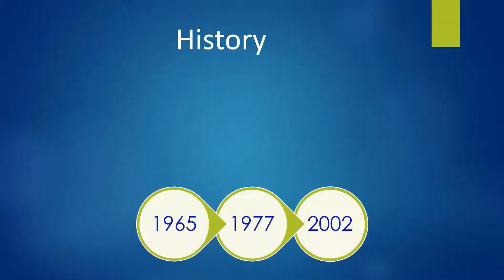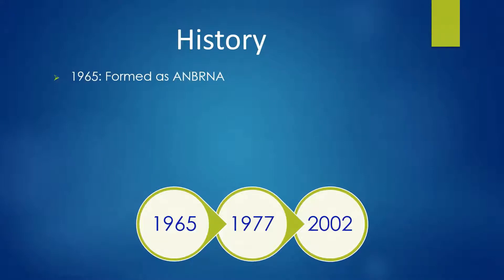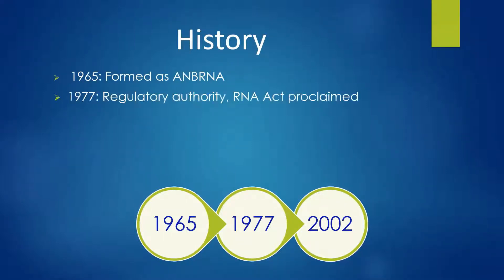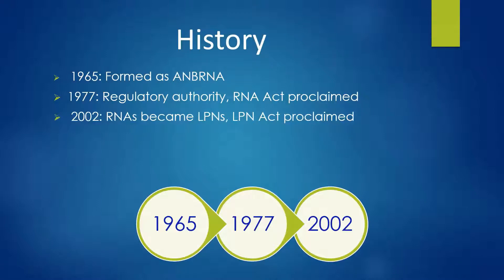I wanted to start by giving you just a little bit of the history behind ANBLPN and regulation. In 1965 the association was first formed and at that time it was the Association of New Brunswick Registered Nursing Assistants because that was our title at that time. Then in 1977 it became the regulatory authority for RNAs and the RNA Act was first proclaimed in 1977 as well. Then we fast forward to the year 2002, when we successfully had our name changed from RNA to LPN to match with most of our counterparts in Canada, and the LPN Act was also proclaimed in 2002.